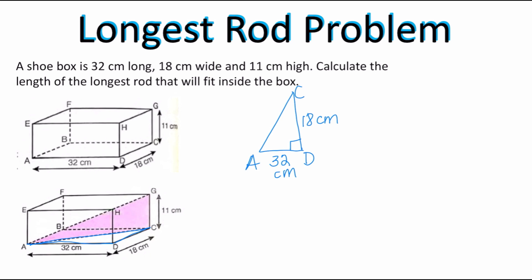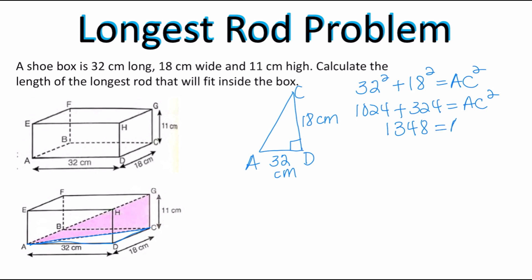I have another video on the Pythagorean theorem if you need to refresh your memory. Here the hypotenuse is the unknown side, so we set up: 32 squared plus 18 squared equals AC squared. 32 squared is 1024, plus 18 squared which is 324, equals AC squared. Adding gives 1348 equals AC squared. Taking the square root of both sides gives approximately 36.7 as the length of AC.